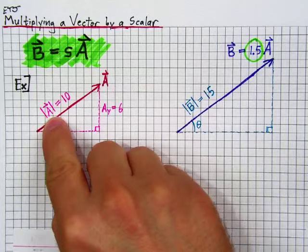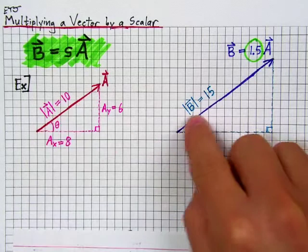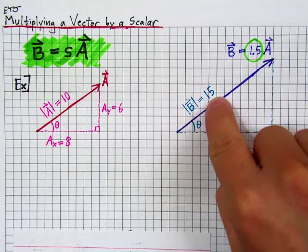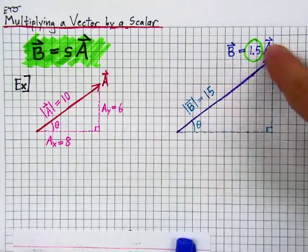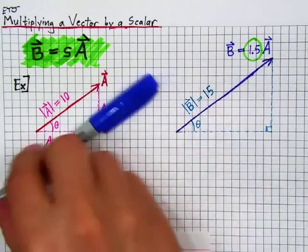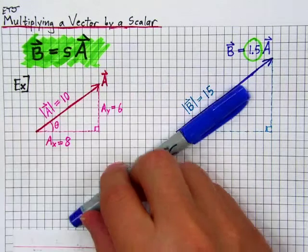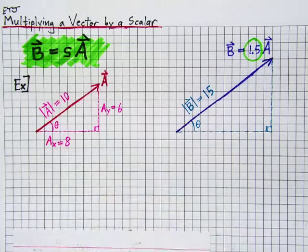It takes that original vector and makes it 1.5 times longer. So if the magnitude of a was originally 10, then the magnitude of b is now 15. Furthermore, scaling it up by this factor doesn't alter the direction of a. a and b are parallel to each other.